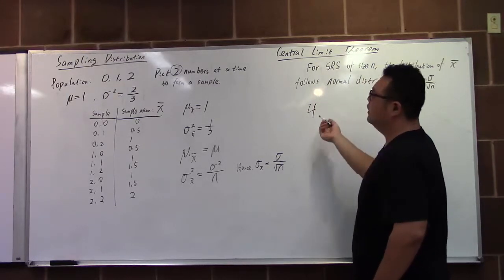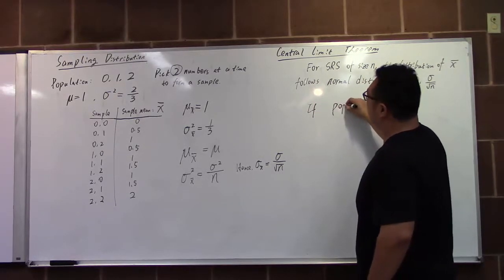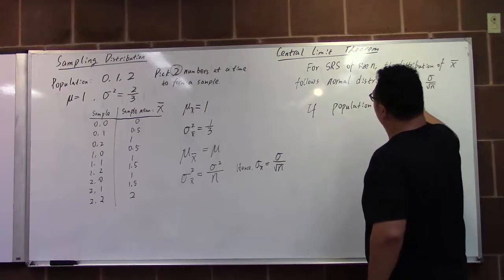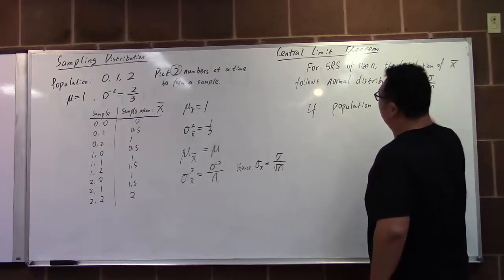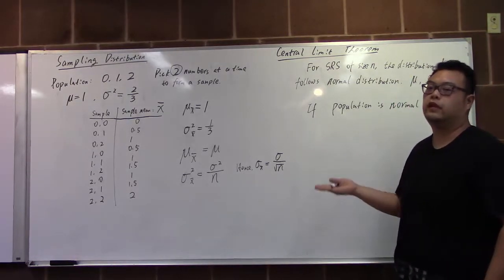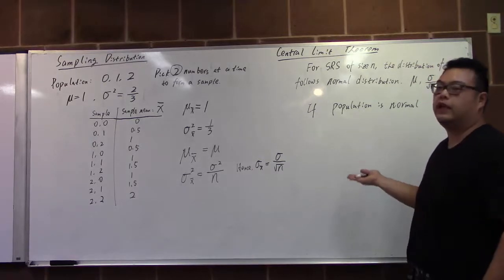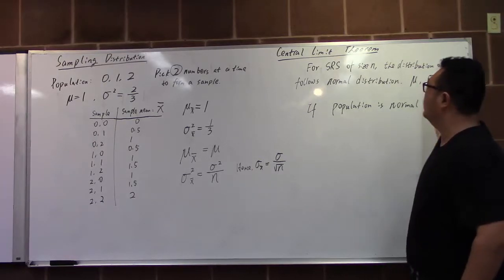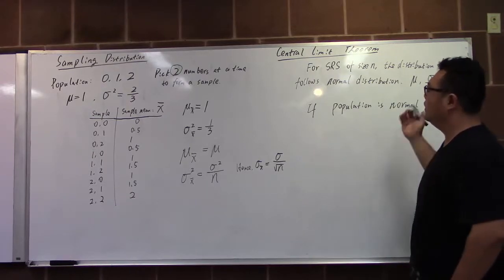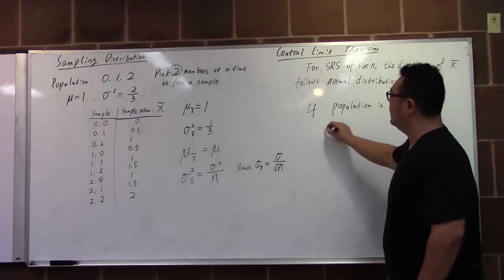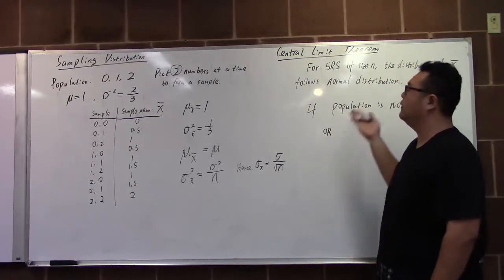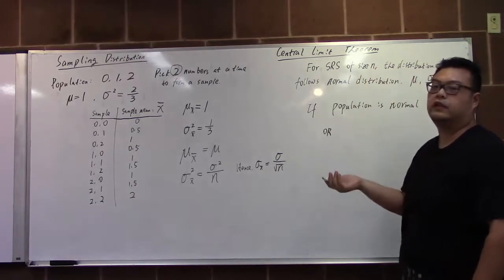Some condition is if population is normal. If the original population is normal then when we do the sampling distribution no matter which size we take, the sample mean has a distribution of normal distribution as well. That is the first condition.